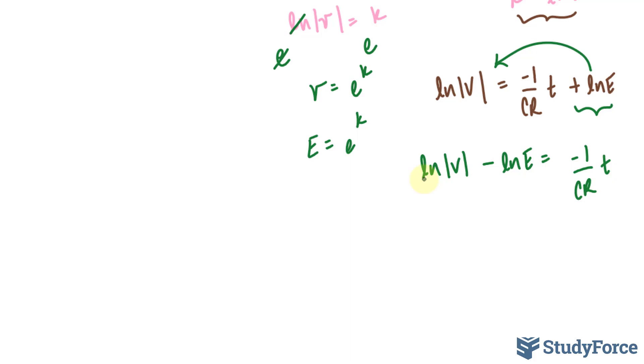Given that our voltage can't be negative, I can drop these absolutes, which I'll do next. Having dropped those absolutes, I can now combine the V and the big E together by putting them as a quotient, where we have ln little v over big E is equal to negative T over CR.